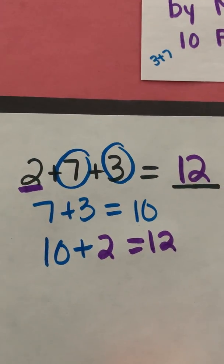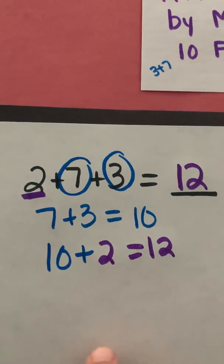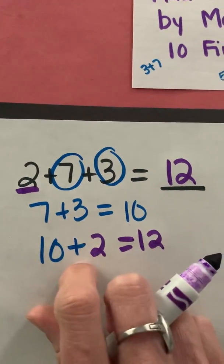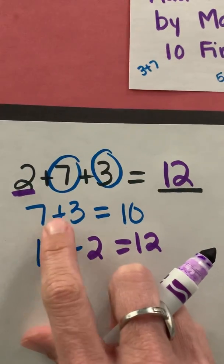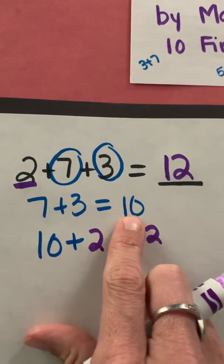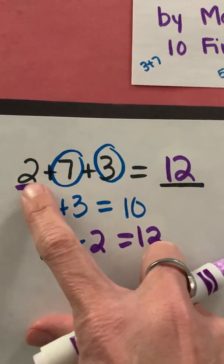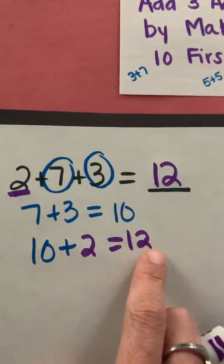First of all remember I was looking to see can I group numbers together to make a 10. I know that two and seven won't give me 10. I know that two and three will not give me 10 but I do know that seven and three give me 10. So I added seven plus three first so I get a sum of 10. Now I've only added two of my addends I still have to add my third one so then I say 10, I take the 10 plus the two to give me 12.